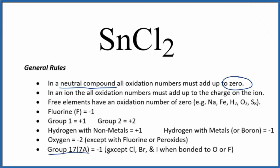It's called the halogens. That will have a negative 1 oxidation number with a few exceptions. Tin, that's not one of the exceptions. So each chlorine will have an oxidation number of minus 1.